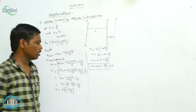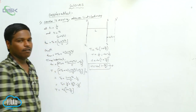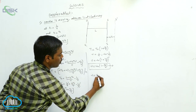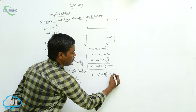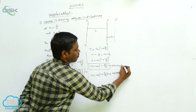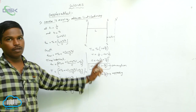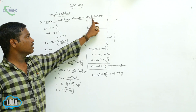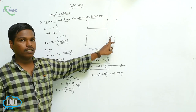When the source is moving away from the observer, the frequency is ν equals ν0 into (1 minus Vs by V). If the source is moving towards — approaching — the observer, then ν equals ν0 into (1 plus Vs by V). These are the two frequency expressions for the Doppler effect when the source is moving and the observer is stationary.